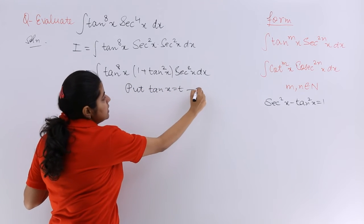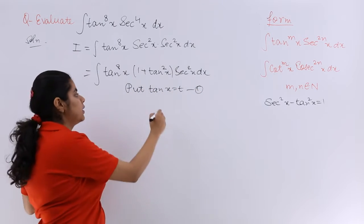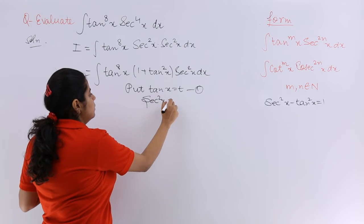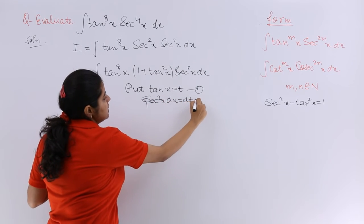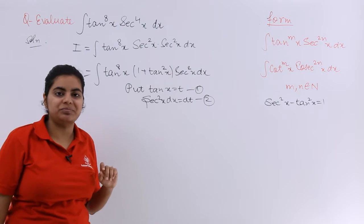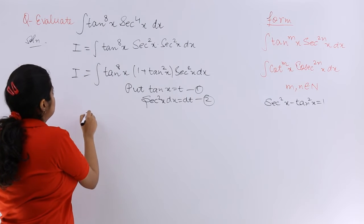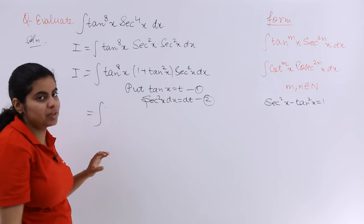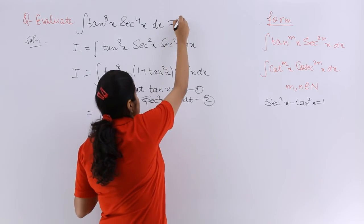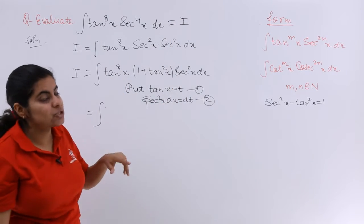Put tan x equals t, equation number 1. Then what is the differentiation? Secant square x dx equals dt, equation number 2. That means my question, that is I, is what? If I make the question as I as I already do in other questions, so it is what?